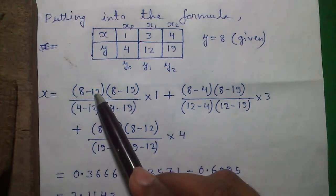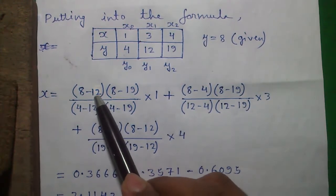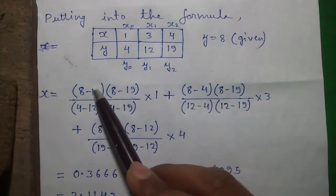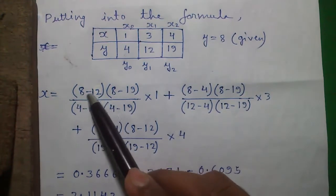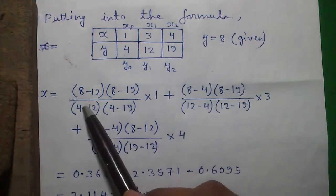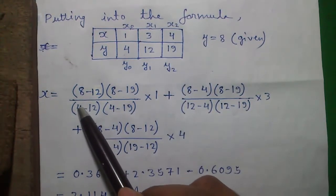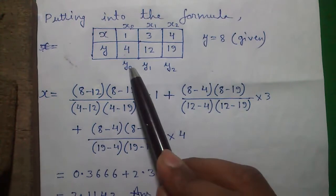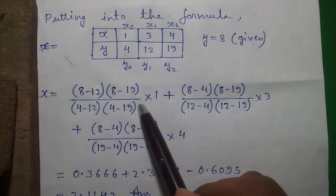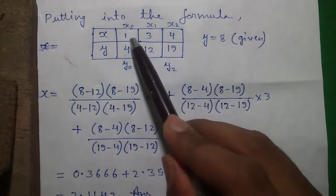So we will just put the formula: y minus y1, this is y1. We won't subtract y0 in the first term. So y minus y1 and y minus y2. And below we will subtract everything from y0. So y0 is 4, 4 minus y1 and 4 minus y2 into x0, x0 is 1.